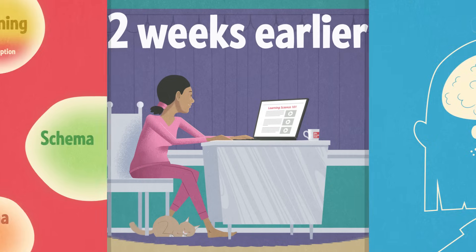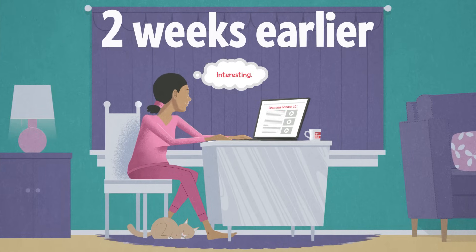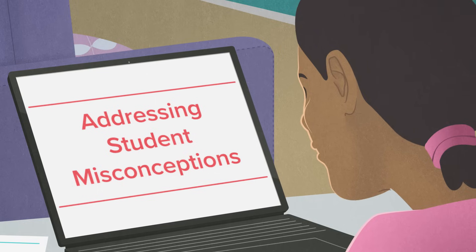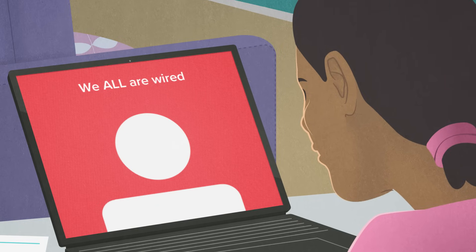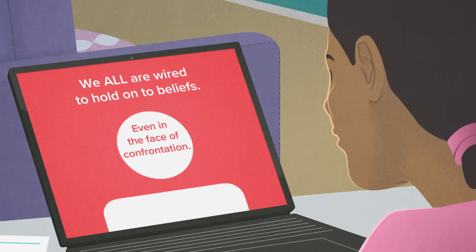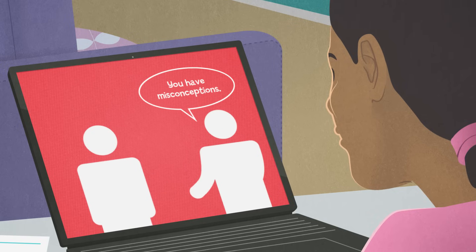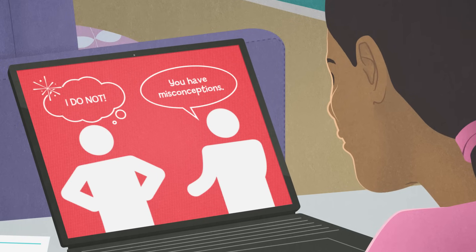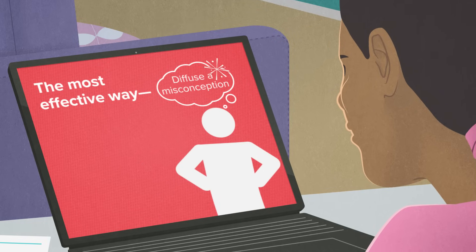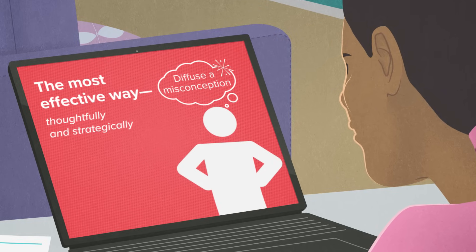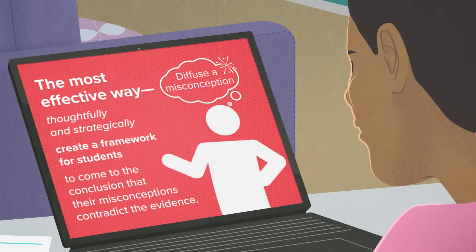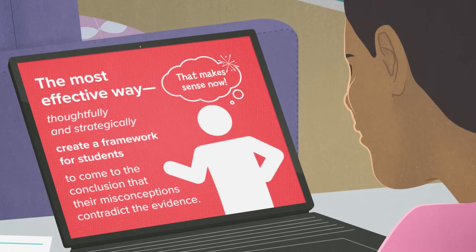Fortunately for Anika, her teacher understands that helping a learner identify and correct a misconception isn't as intuitive as one might think. She has learned that we are all wired to hold on to beliefs, even in the face of confrontation, and addressing a misconception head-on can actually serve to reinforce it in the mind of a learner. The most effective way to diffuse a misconception is to thoughtfully and strategically create a framework for students like Anika to come to the conclusion that their misconceptions contradict the evidence.